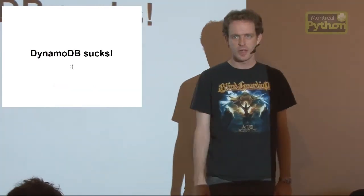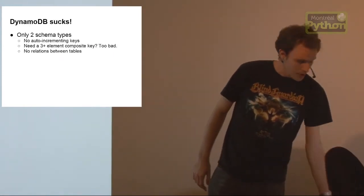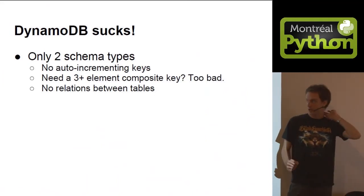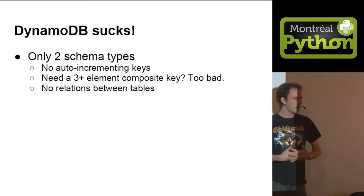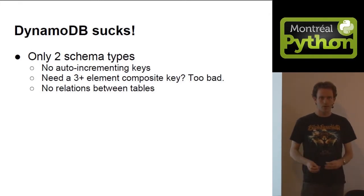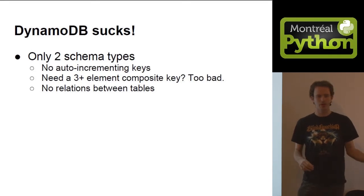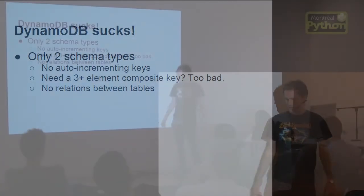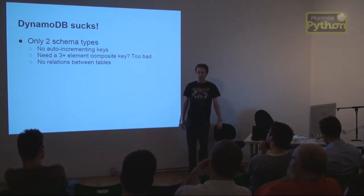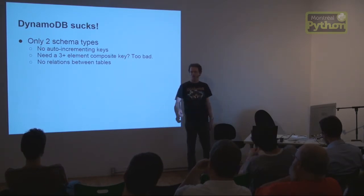DynamoDB also has limitations. There are only two types of schema: a simple primary key or a composite primary key — so if you need a composite key of three or more elements, you have to hack around it. The hash key is never auto-generated; there are no auto-incrementing keys. And there are no relations between tables — each table exists in a void, with nothing but your code to ensure data consistency between tables.